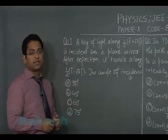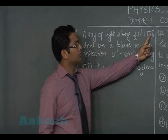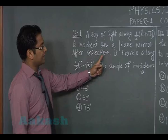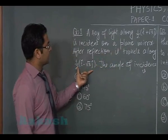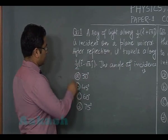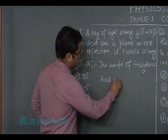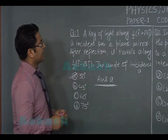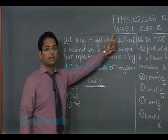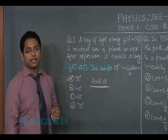The first question says a ray of light along the given direction, i.e. plus root 3 j by 2, is incident on a plane mirror. After reflection it travels along a given direction. The angle of incidence is 30 degrees. This can be very easily solved by taking the dot product of the incident ray and the reflected ray to calculate the angle.